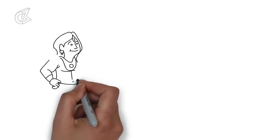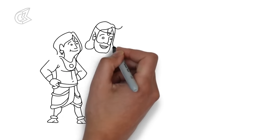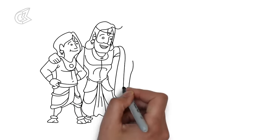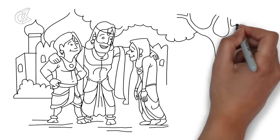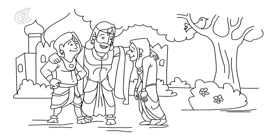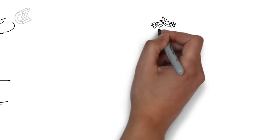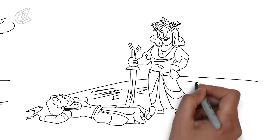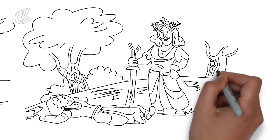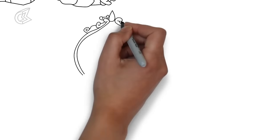After the passing of King Shantanu, Bhishma acted like a father to his two half-brothers, Chitrangad and Vichitraveria. He taught them state craft and brought them up to be capable administrators. But before long, Chitrangad battled a Gandharva and was killed. Vichitraveria, who was not in good health, became king of Hastinapur.